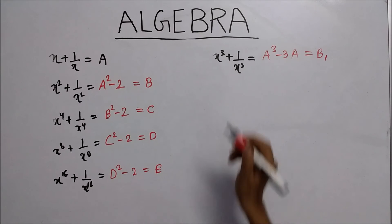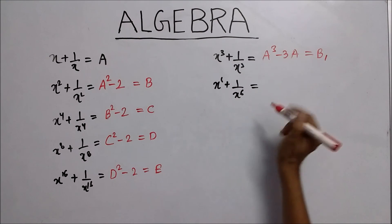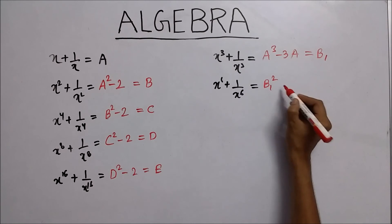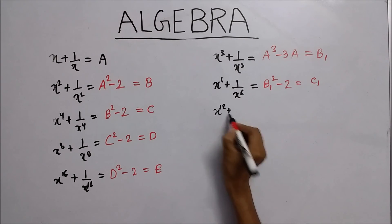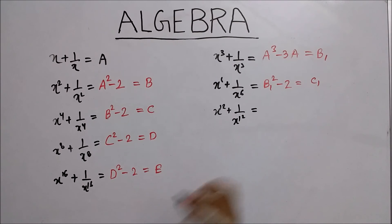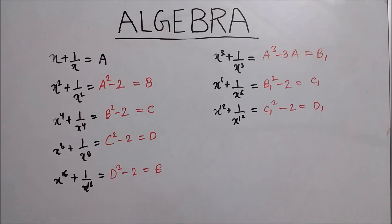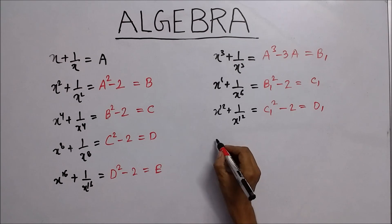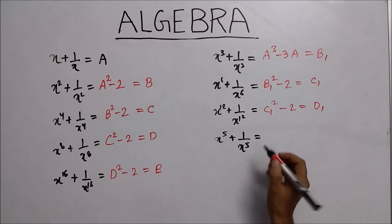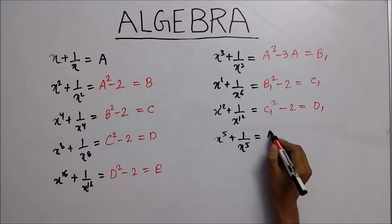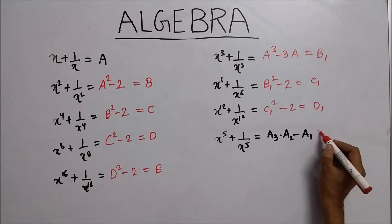Now, to find x to the power 6 plus 1 upon x to the power 6, the value is b1 squared minus 2. Write this as c1. To find x to the power 12 plus 1 upon x to the power 12, the value is c1 squared minus 2, write this as d1. Similarly, to find x to the power 5 plus 1 upon x to the power 5, write it in the form a3 times a2 minus a1. Write this as b2.